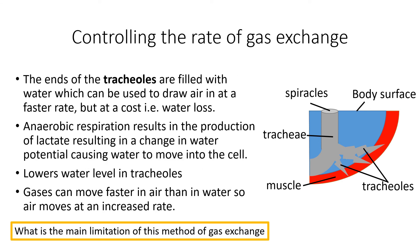Regulation of water loss comes down to water potentials and osmosis. During respiration there is a natural build-up of gases, but when the insect switches to anaerobic respiration it produces lactic acid, which changes the water potential inside the cells. As a consequence, water is drawn from the tracheoles into the cells. As water moves out of the tracheoles, more of the tracheole is exposed to atmospheric gas, and as a consequence the rate of gas exchange increases.